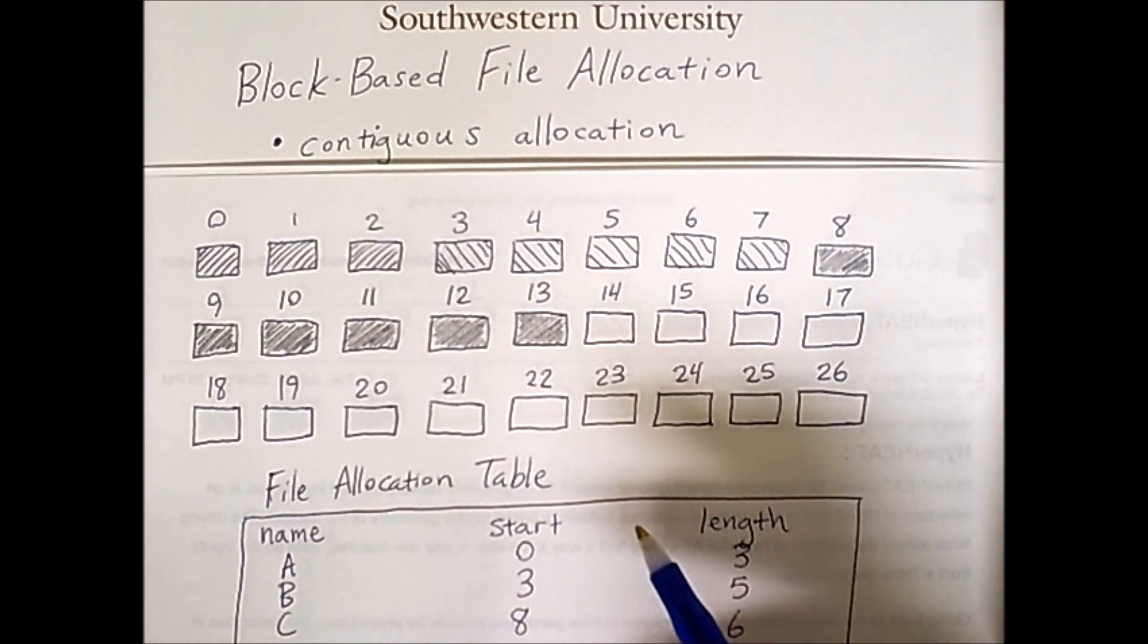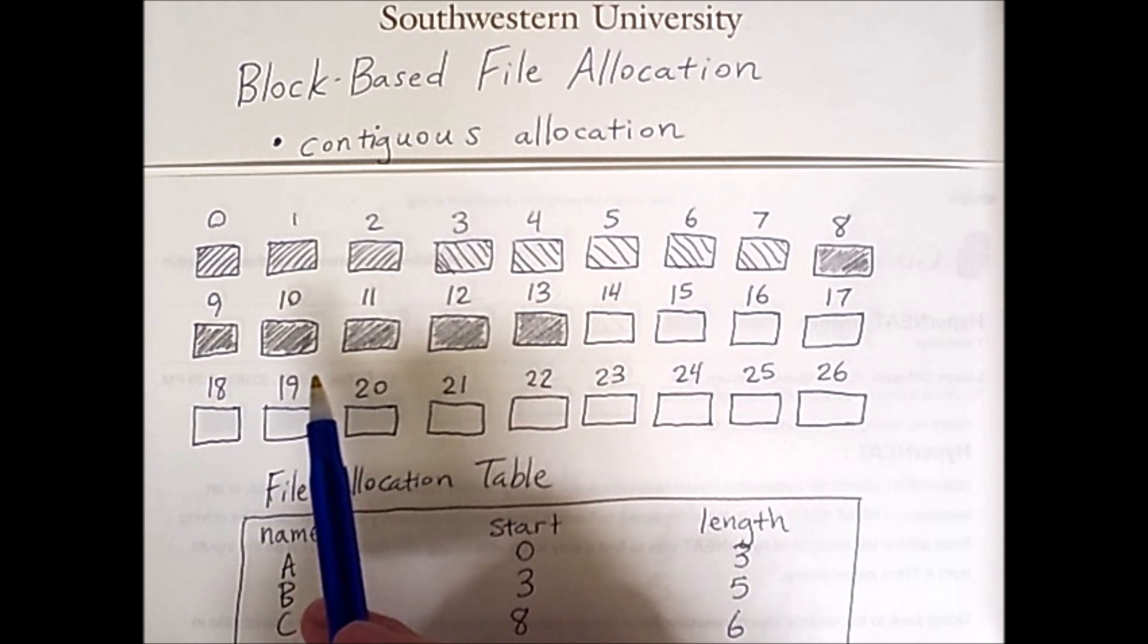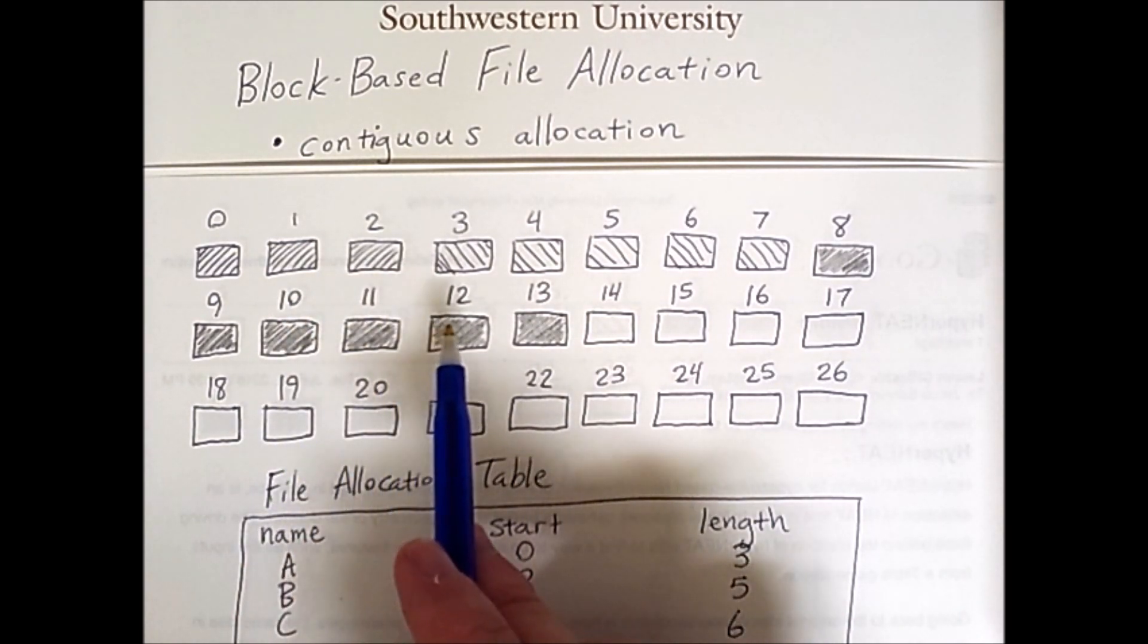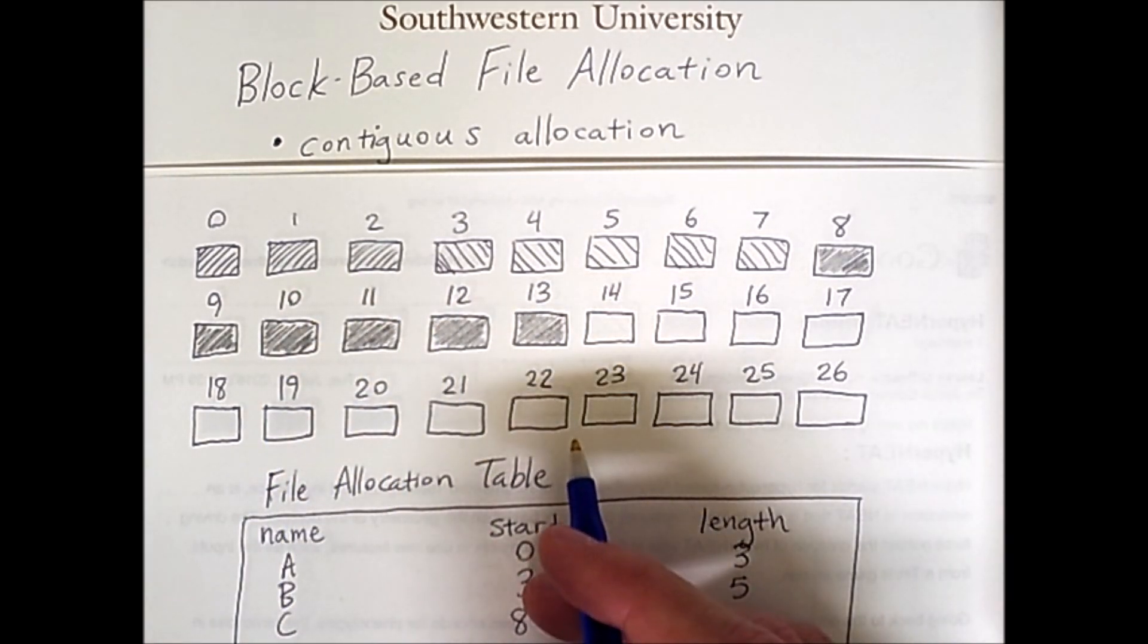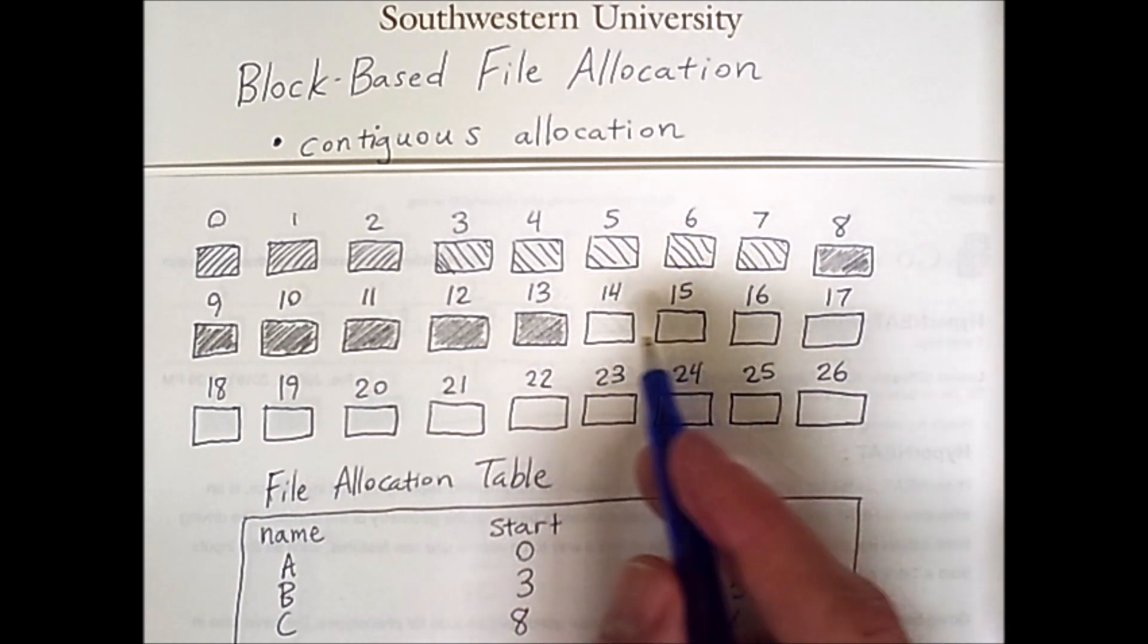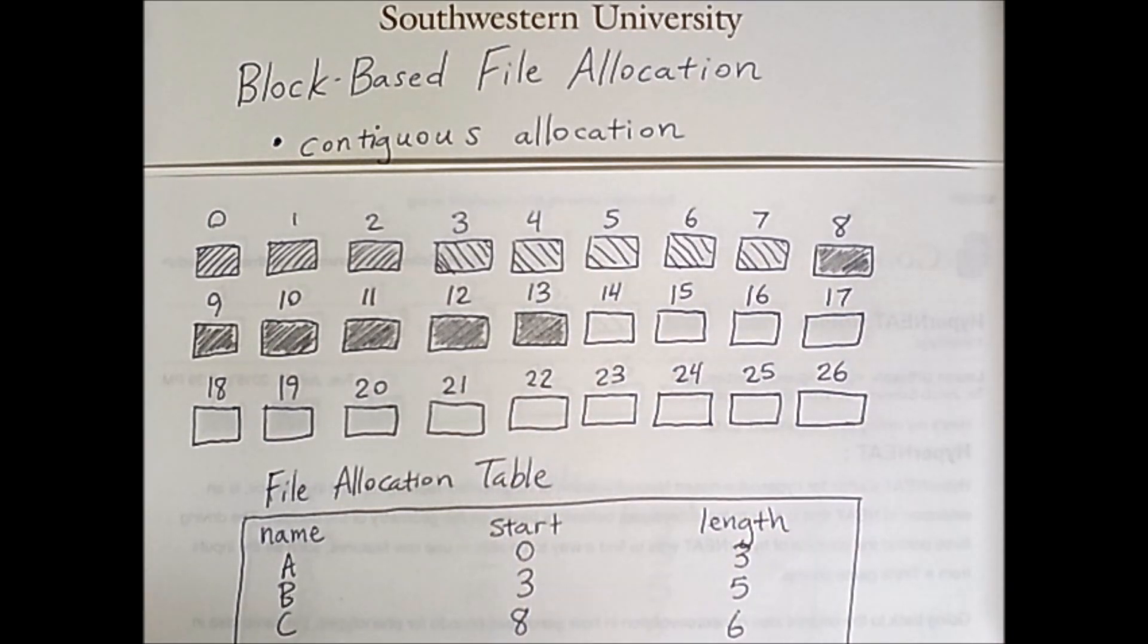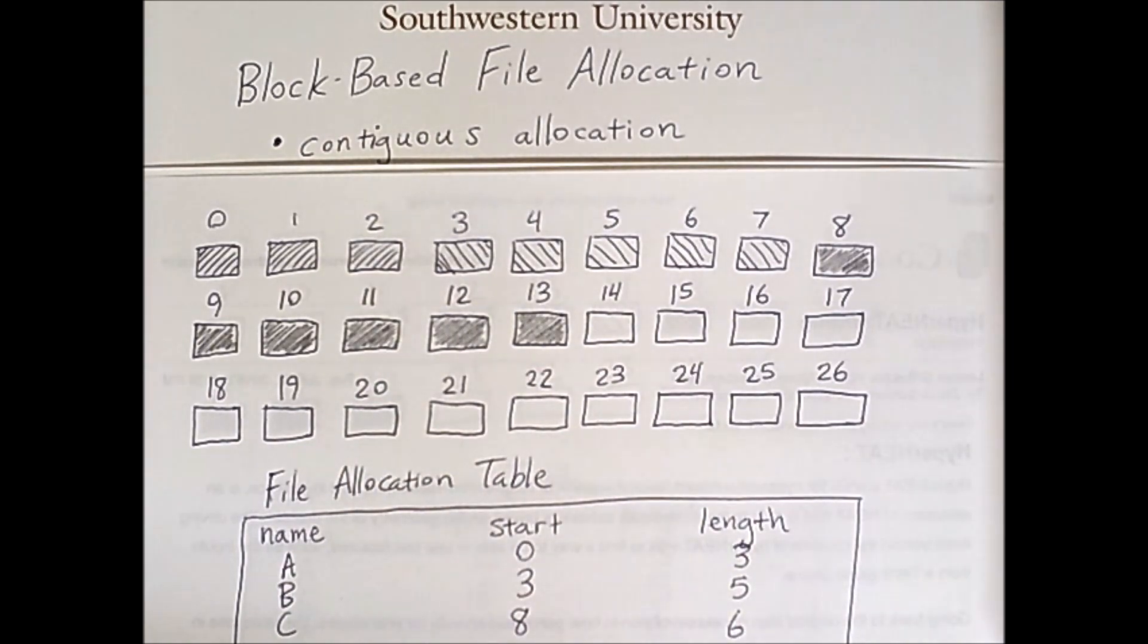In the compacted disk all files have been moved to the lower indices and there are no empty blocks preceding any of the files. So at this point it would be easy to add a new file starting at block 14 of any length going up to block 26. Of course this compaction operation is quite expensive which is a major restriction on using contiguous file allocation.